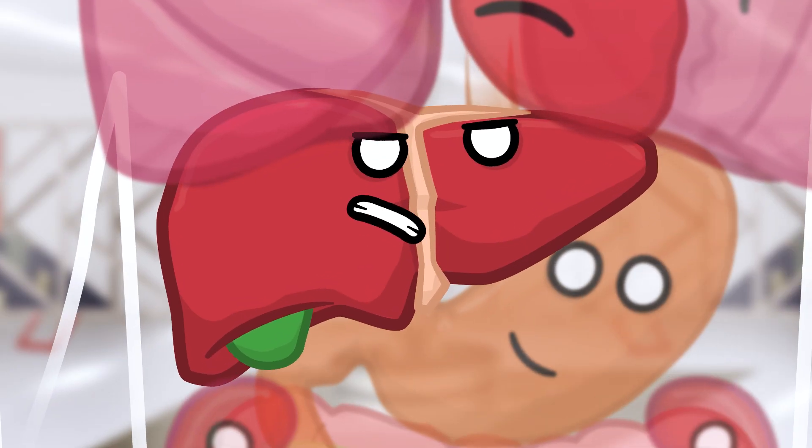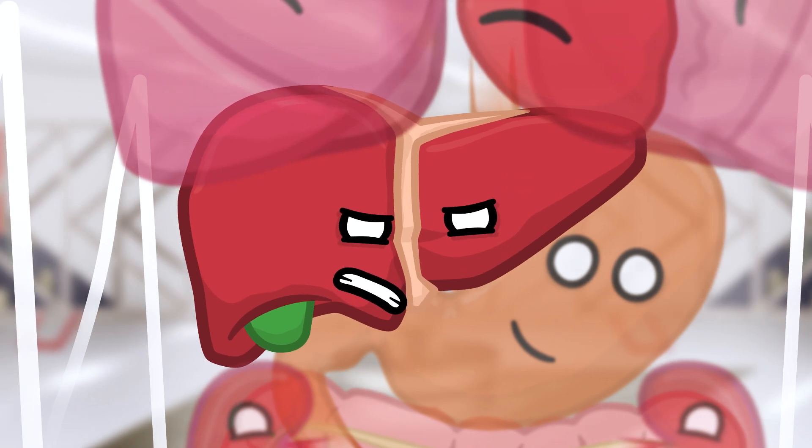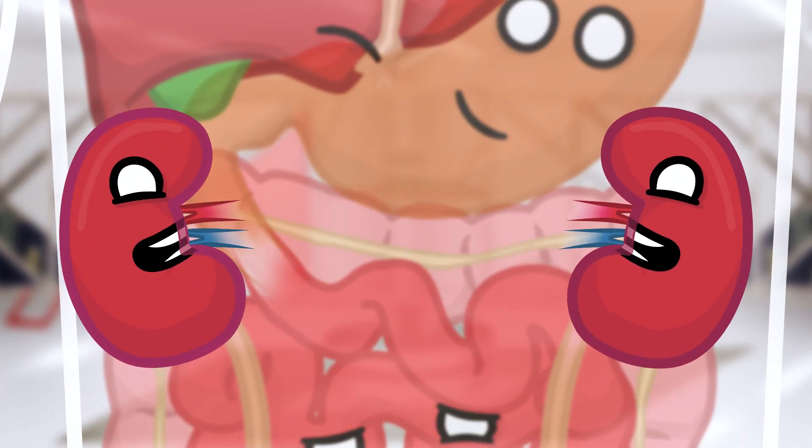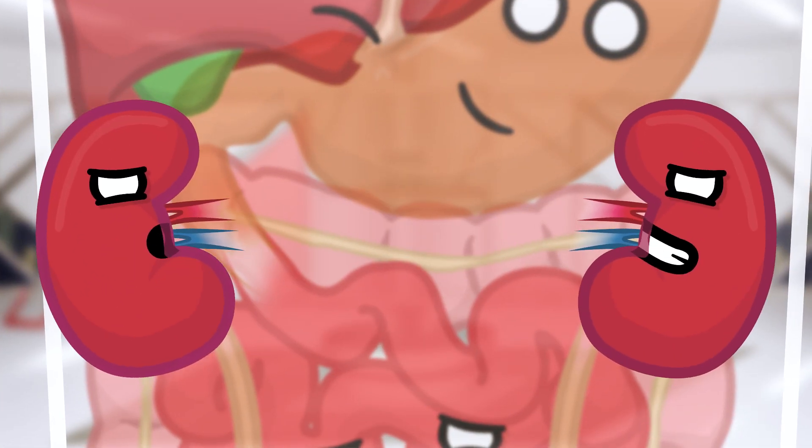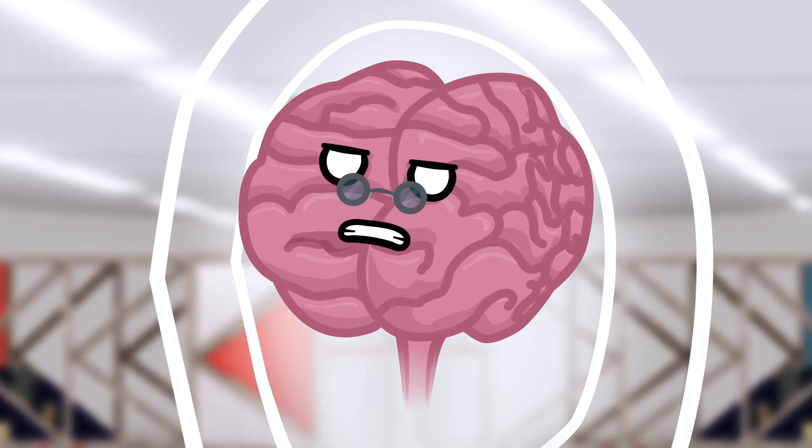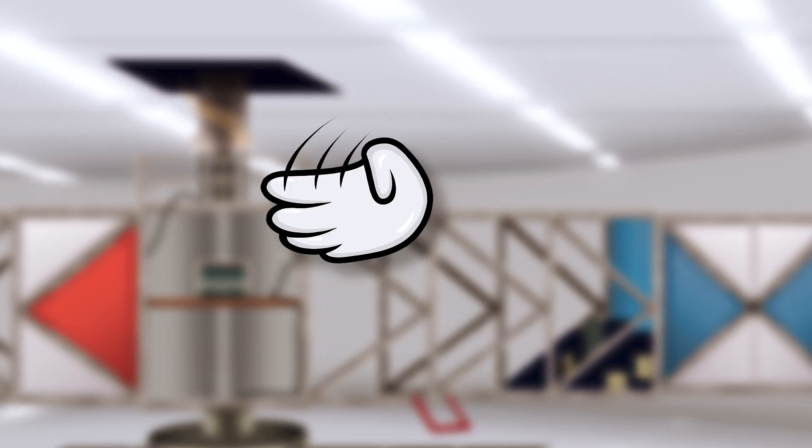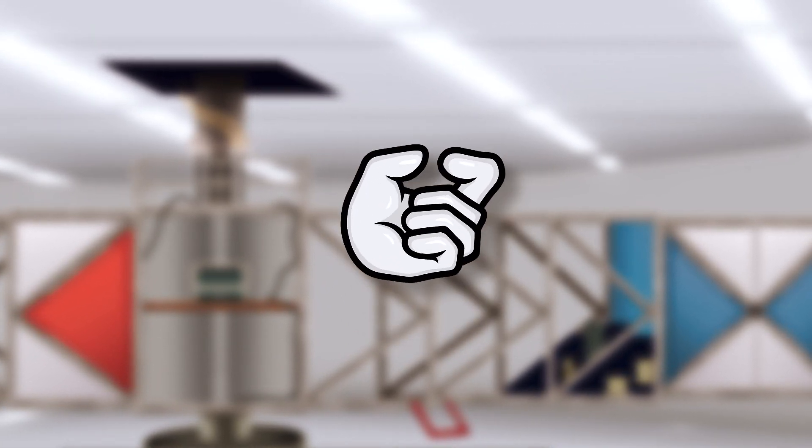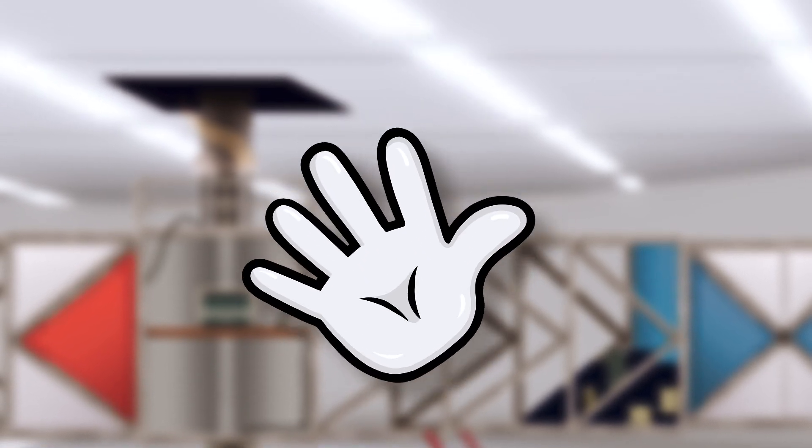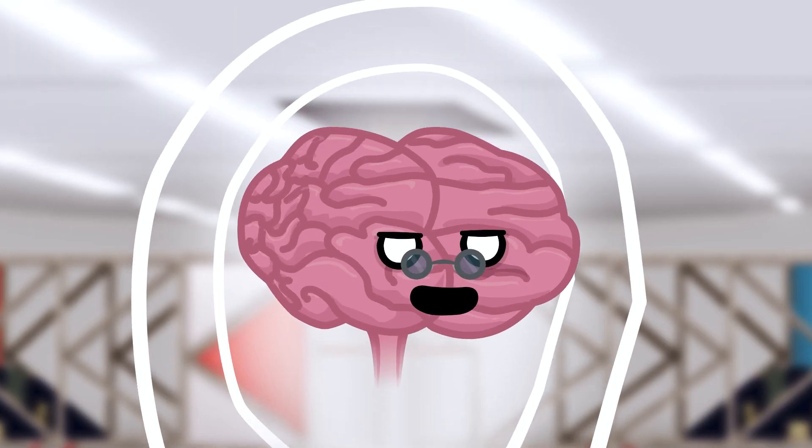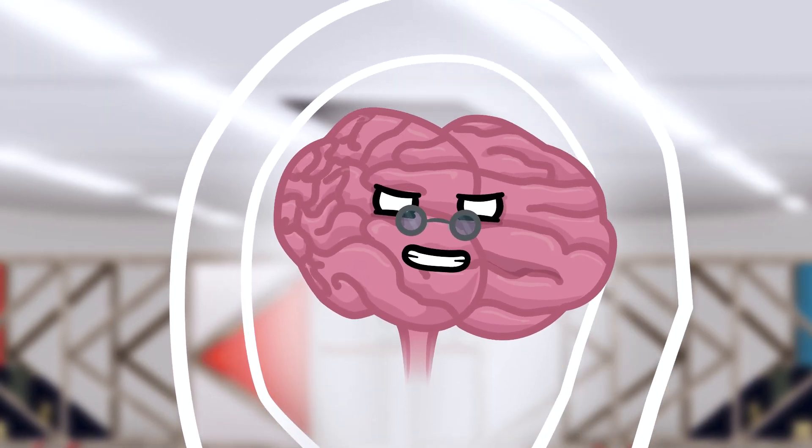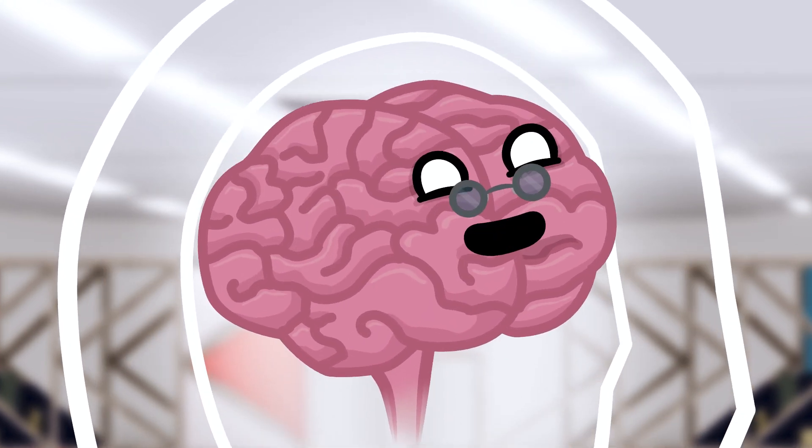So what'll happen to Brain if he does experience G-Lock, Doctor? He'll probably inflate and pop like a balloon! Ha ha! Very funny! Nothing that dramatic! Brain will first experience some loss of vision, it'll start as a gradual loss of color, then tunnel vision, then complete loss of consciousness! That'll never happen! We've got this hardcore astronaut training in the bag!